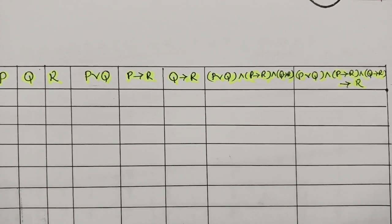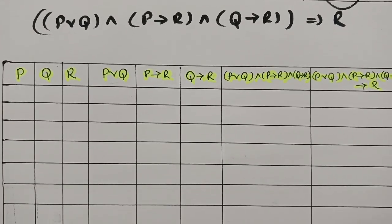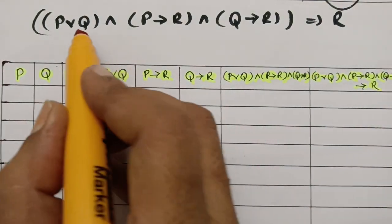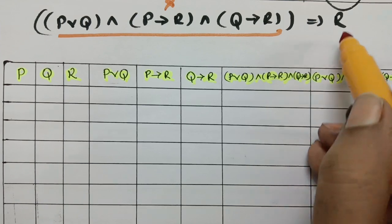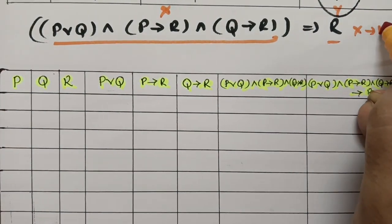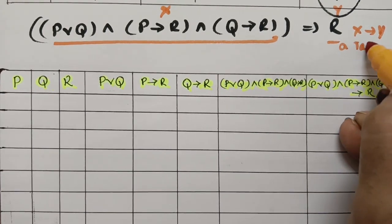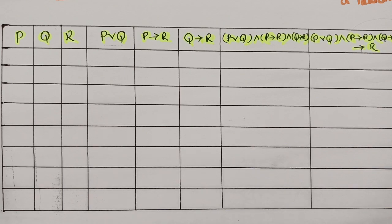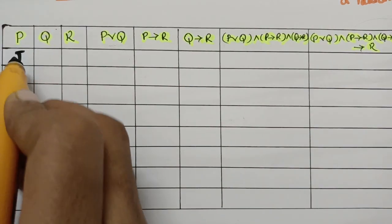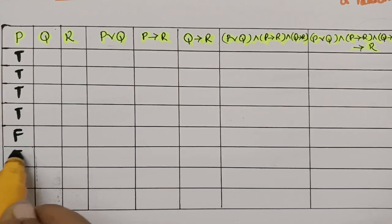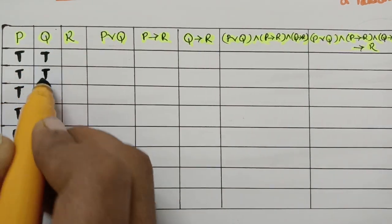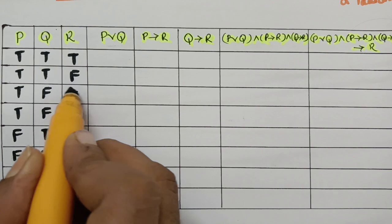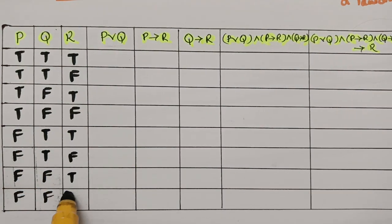The last question is: (p∨q)∧(p→r)∧(q→r) double implies r. We consider the whole left side as x and r as y. There are three propositions p, q, r, so we need eight rows: four trues then four falses for p, two trues two falses alternating for q, and alternating true-false for r.